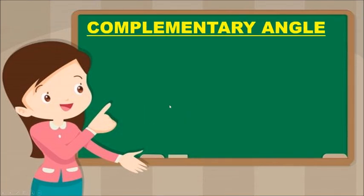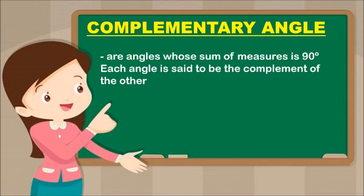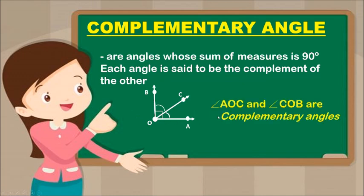Next is Complementary Angle. Complementary angles are angles whose sum of measures is 90 degrees. Each angle is said to be the complement of the other. Angle AOC and Angle COB are complementary angles, and together they equal 90 degrees.